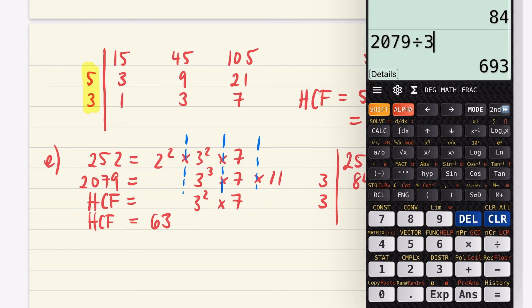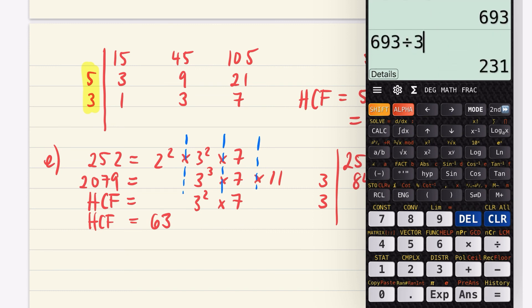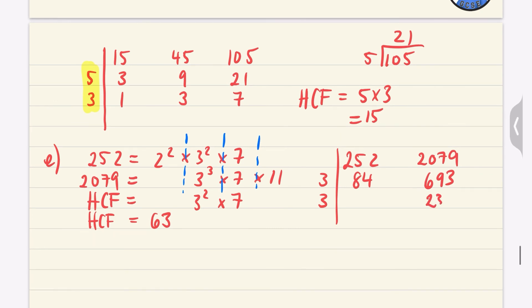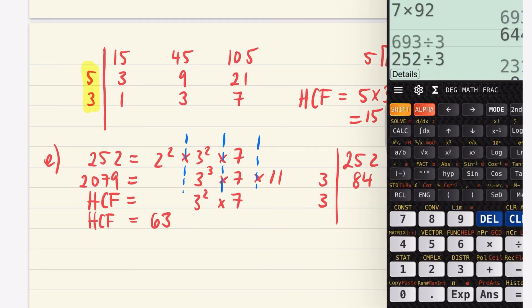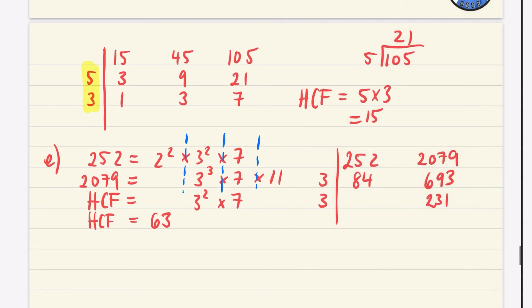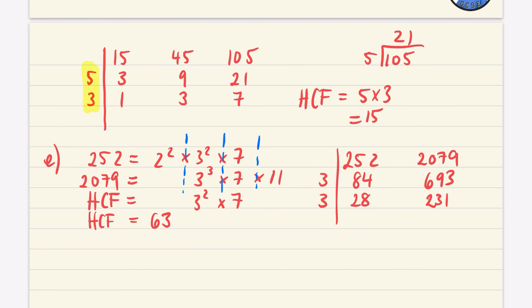Using divisibility checks, they're both divisible by 3 again: 693 ÷ 3 = 231 and 84 ÷ 3 = 28.